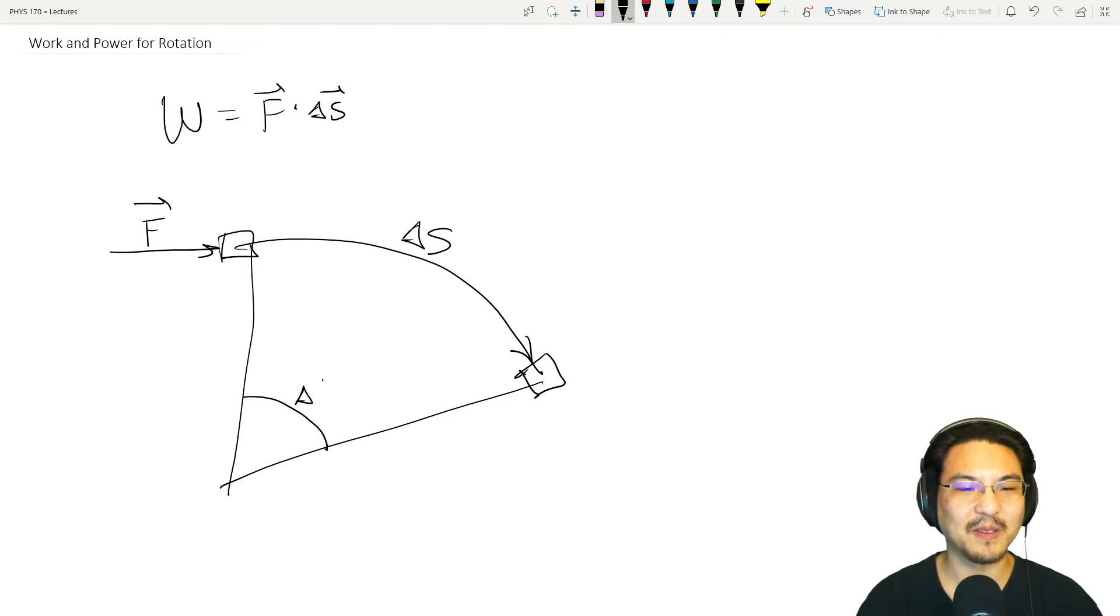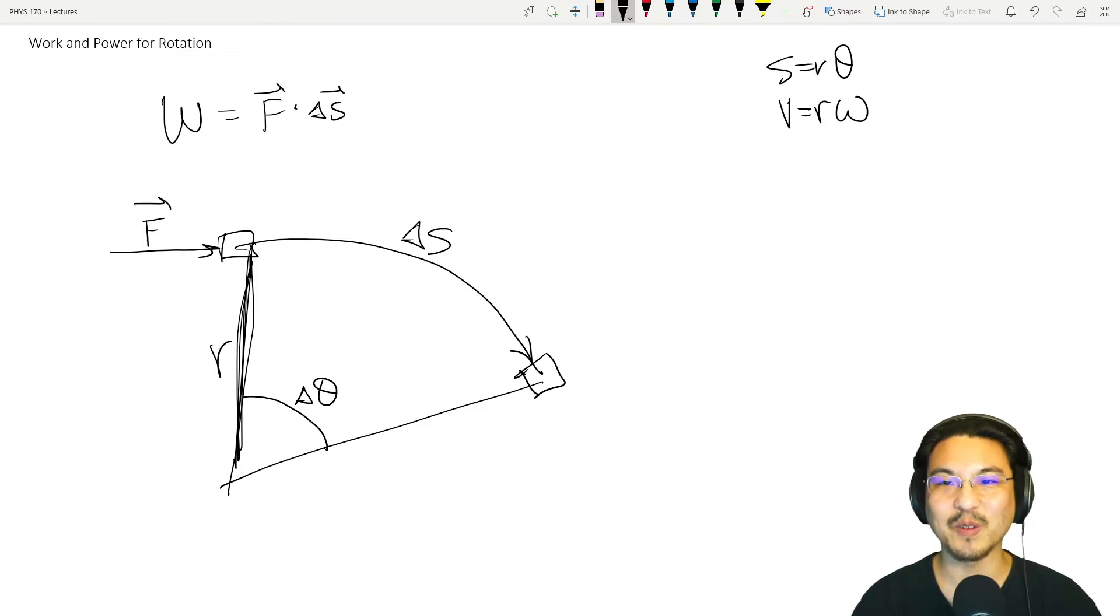So we remember the relationship between arc length and angle was something like this. And then you take a derivative, then velocity is rω. Take one more derivative.